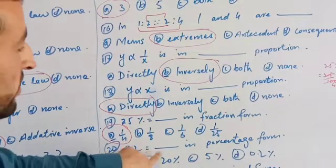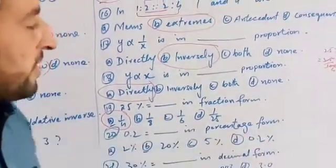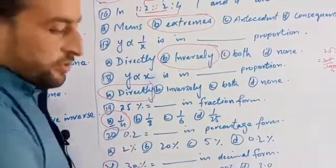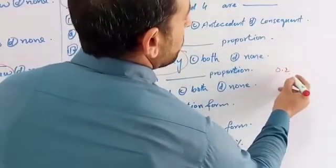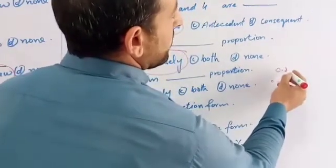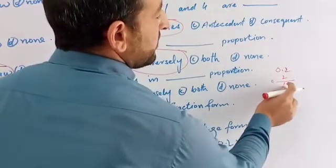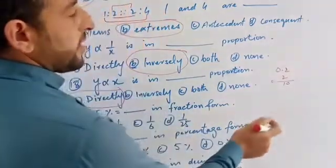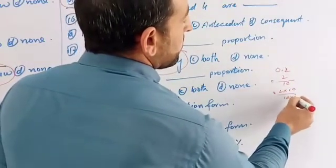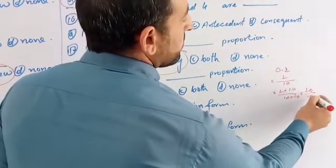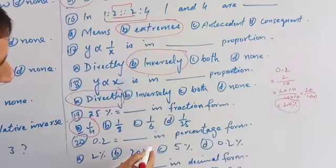Number 20: 0.2 is equal to what in percentage form? The options are 2%, 20%, 5%, and 0.2%. 0.2 equals 20%. We see 0.2: the important point is that one has a decimal point. Once 0.2 is multiplied — 10 plus 10 and so on — we get 20. So 0.2 equals 20%.